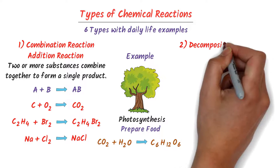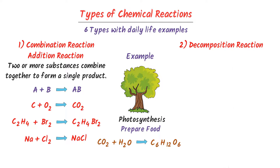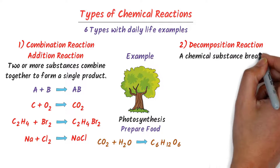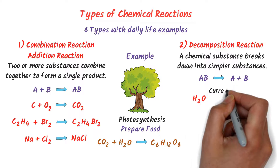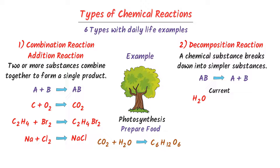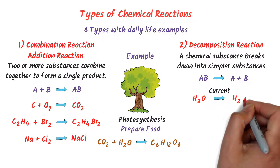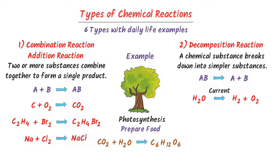Secondly, decomposition reaction. In this type of reaction, a chemical compound breaks down into simpler substances — like AB would break down to A plus B. For example, consider water. When we pass electric current through water in electrolysis, it is broken down to hydrogen gas plus oxygen gas.